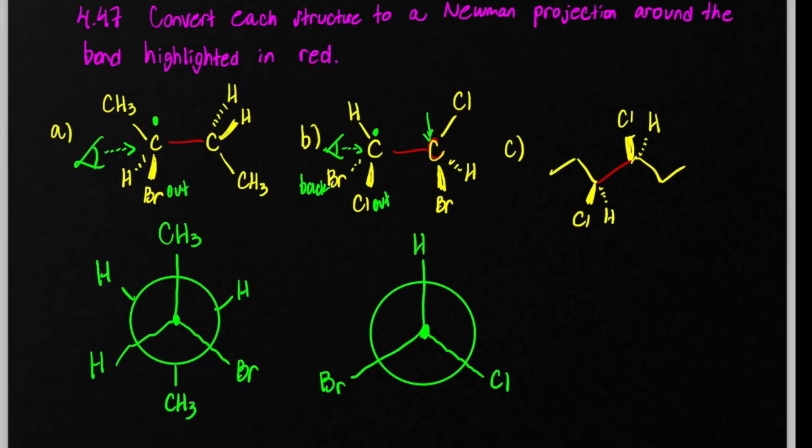And then the Newman structure is pretty complicated here. Remember, this is the back carbon, the open circle of the Newman projection. So we want to draw lines to the open circle. And what you see also pointing up is a chlorine. So it's eclipsing.